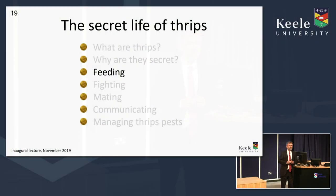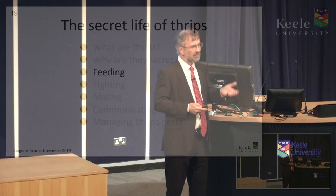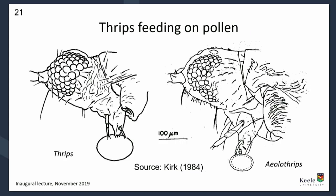Feeding. Thrips feed, and they can feed on plant tissue. But when I started my PhD, someone said thrips don't feed on pollen — they can't, because it would be like a snipe feeding on a golf ball. With very long thin mouthparts, a pollen grain would be rather too big. How could thrips feed on pollen grains? That was one of the challenges I tackled as a PhD student — watching thrips feeding on pollen grains under the microscope.